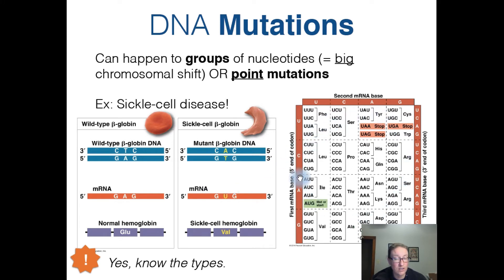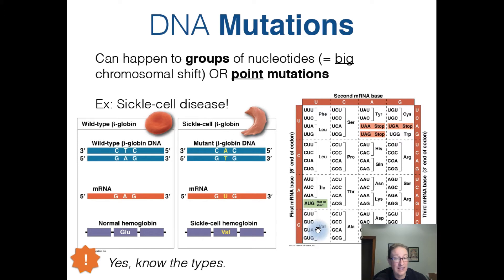Looking at the codon chart that translates each triplet codon to an amino acid: GAG codes for glutamate. In contrast, in the mutant beta globin DNA, the sequence GUG codes for valine instead. Each of these amino acids has a very different molecular structure, so switching one amino acid for another impacts protein folding — going from something polar to something non-polar, or something with a different shape.